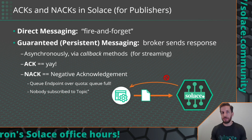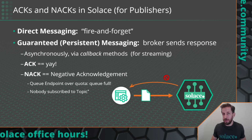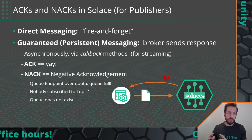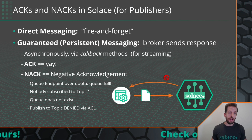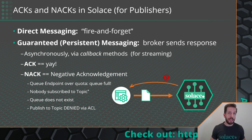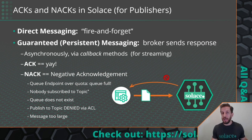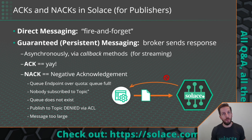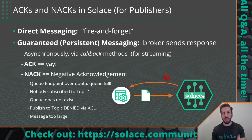Other reasons include: nobody is subscribed to your topic — if you're publishing persistent messaging, you can optionally configure the broker to send a NACK when you publish on a topic nobody's listening to, which is quite useful. If you're publishing directly to a queue rather than using topic-to-queue bridging, you'll get a NACK if you publish to a queue that doesn't exist. Every client also has an ACL — an access control list — that defines what topics you're allowed to publish on, so you might get an ACL violation. Or perhaps you're sending a message that's too large, since every queue has a maximum message size and the broker has a hard limit of 30 megabytes. Out of these five reasons, queue over quota is by far the most common.